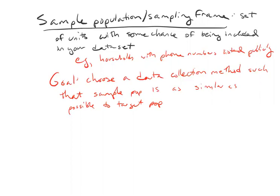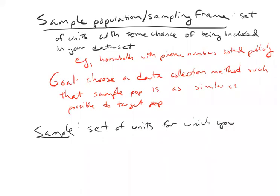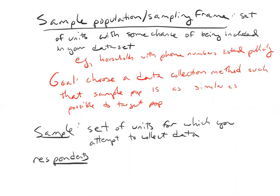The next term we'll define is 'sample.' The sample is the set of units for which you attempt to actually collect data. There's some ambiguity in the next two terms we're going to define — they're sometimes used somewhat interchangeably. And then 'respondents': this is the set of units actually in your dataset.